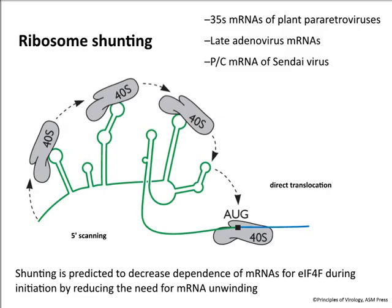RNAs with this property of ribosome shunting have been found in a number of viruses: cauliflower mosaic virus, adenovirus, and a paramyxovirus — sendivirus. We think viruses utilize shunting to decrease the need for the five prime end helicase. In some cases viruses inhibit five prime end translation, so the helicase isn't available to them, and they use this mechanism to get around that.